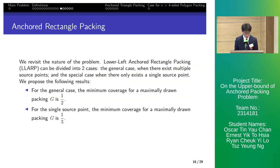We now investigate the upper bound of LARP. It can be divided to two cases, the general case and single source point. For these two cases, the minimum density is 1 half and 1 third respectively.